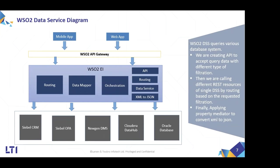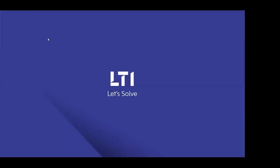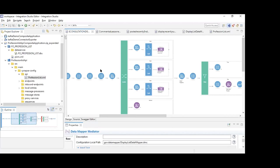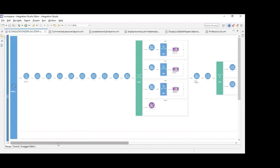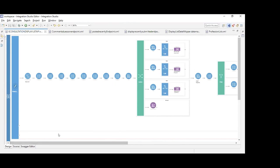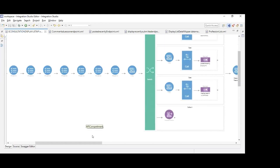For the data service use case, we have an API that exposes a data service. The data service in WSO2 EI connects to a database and returns the response as a JSON dataset. Let's quickly go into the code section. This is an example flow of the orchestration and switch use case. This is the API layer exposed to the external world — we set a bunch of properties when a request comes in.